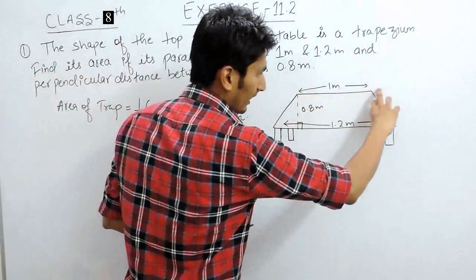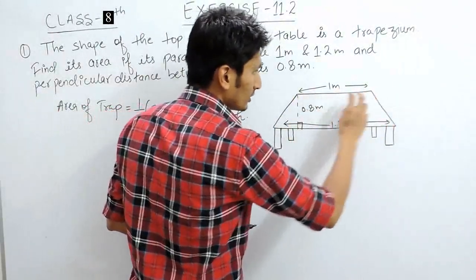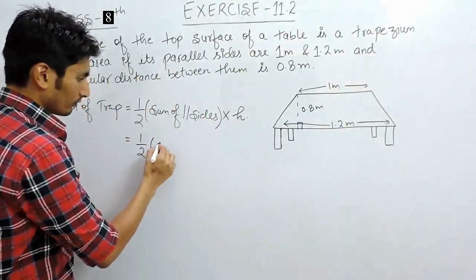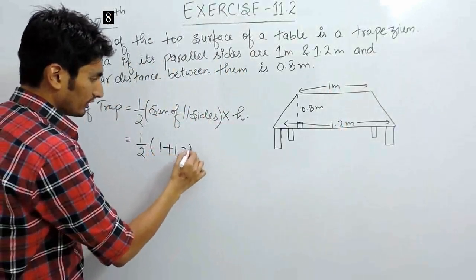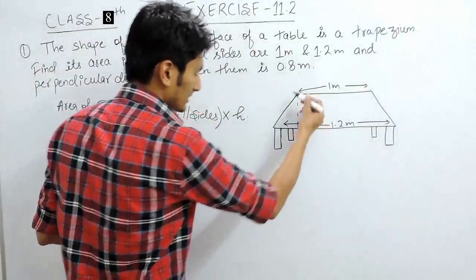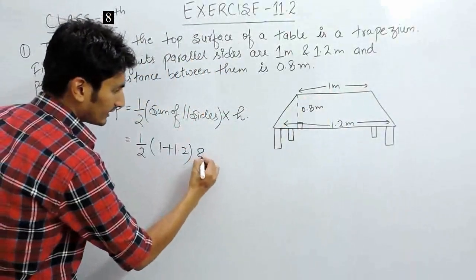We know that these are parallel sides. So sum will be 1 plus 1.2. So 1 plus 1.2 will be the sum of parallel sides into the perpendicular distance which is 0.8.